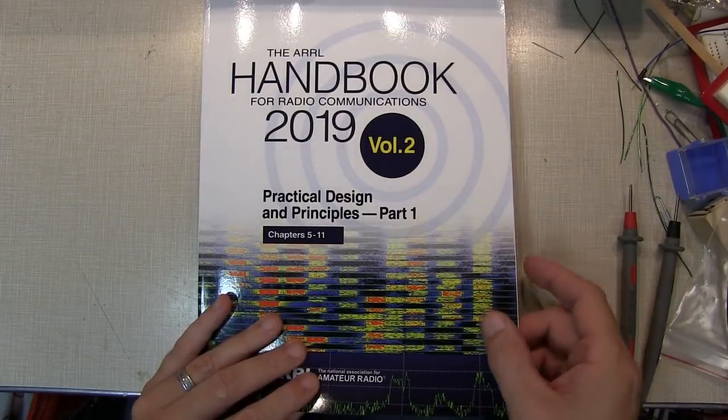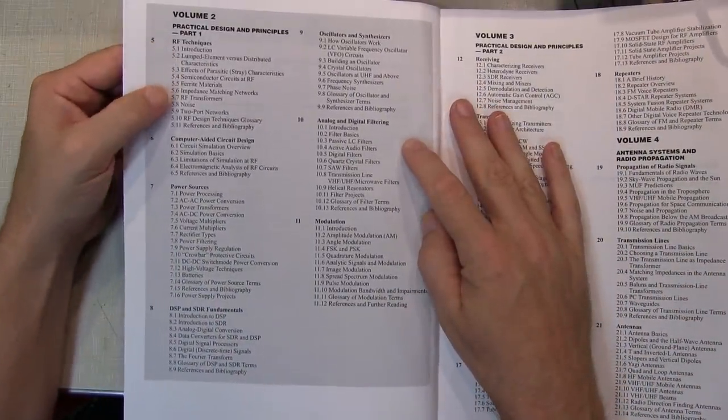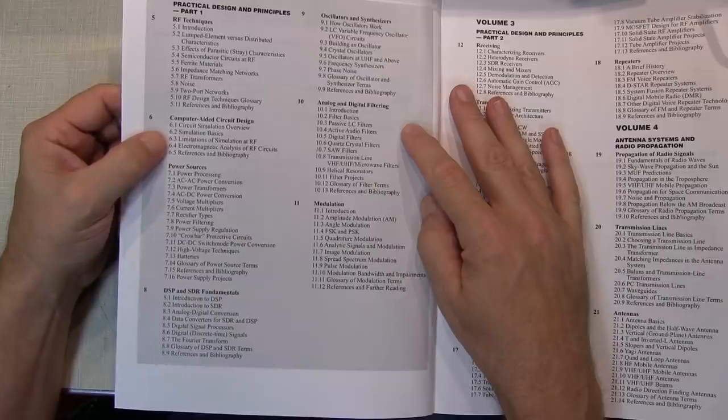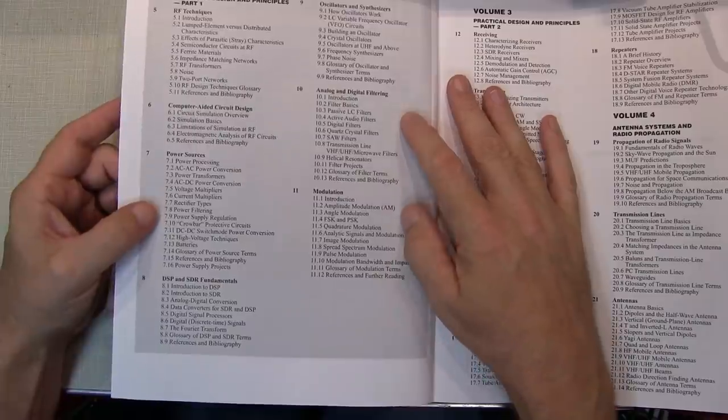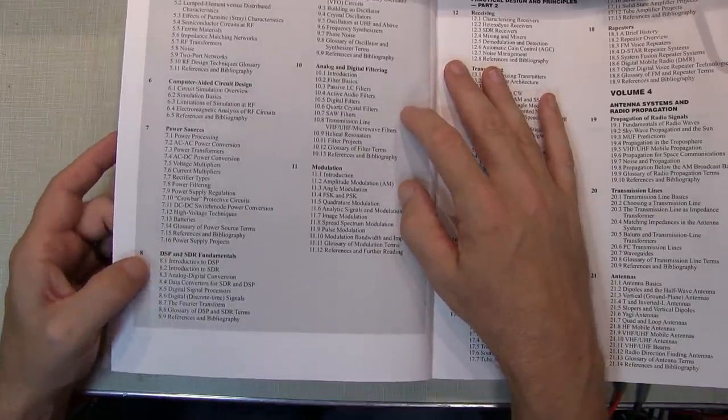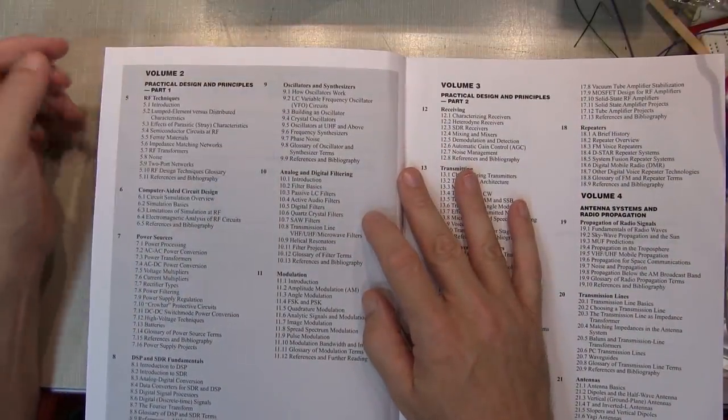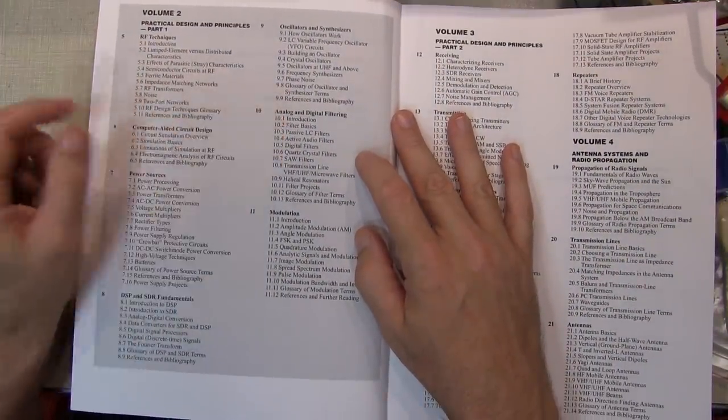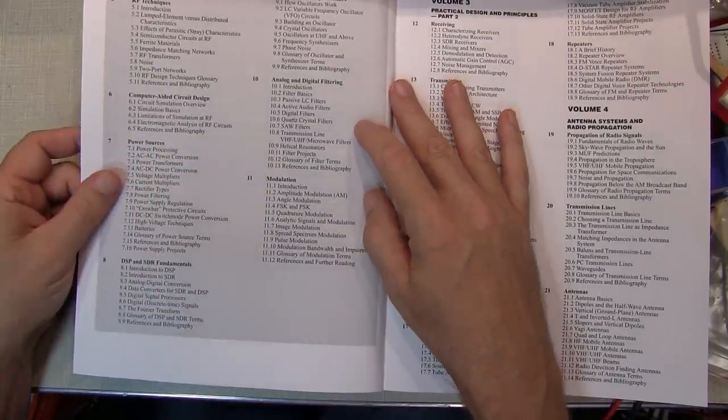Volume 2 is the first part of Practical Design and Principles, and it covers topics such as basic RF techniques, computer-aided circuit design including simulation, power sources AC and DC, power supplies and such, digital signal processing and software-defined radio or SDR fundamentals, as well as getting into oscillators and synthesizers, analog and digital filtering techniques, and modulation techniques.